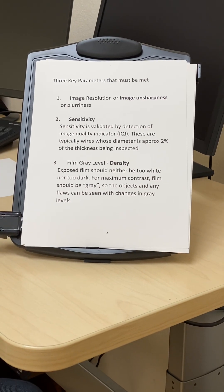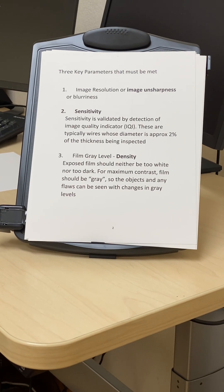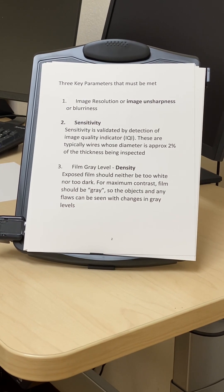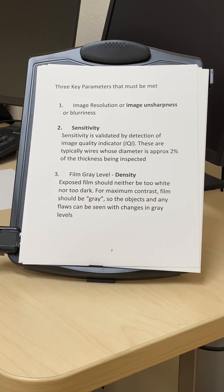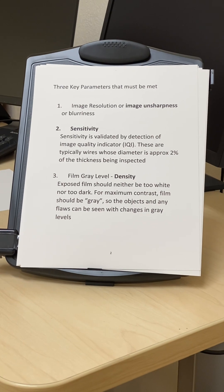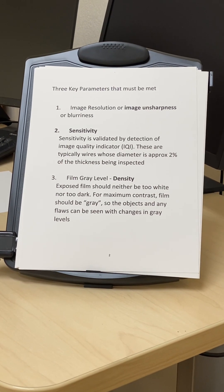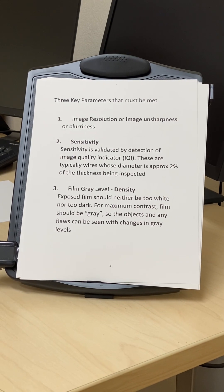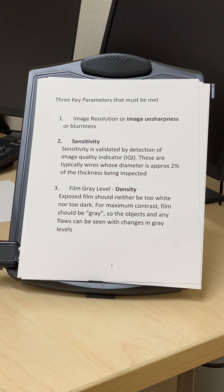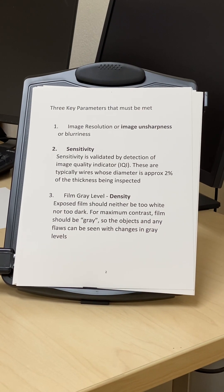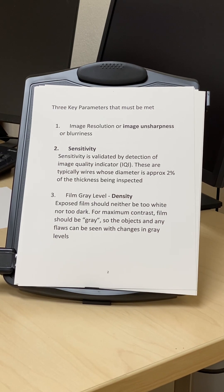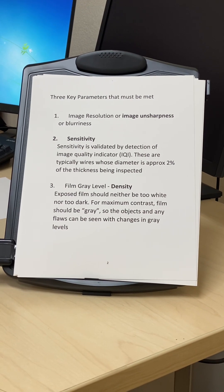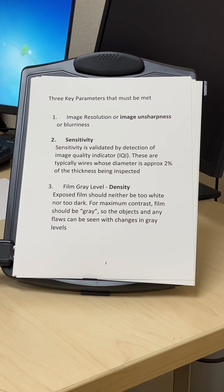There are three key parameters. The first is image unsharpness, which is the blurriness of the image or shadow, also called image resolution. The second is sensitivity — whether the radiograph had enough sensitivity to detect a wire or small hole in what's called an IQI or penetrometer. The third parameter is film gray level, also called density, meaning the film should be neither too white nor too black, but gray, to have good contrast of the object.